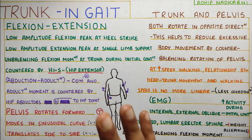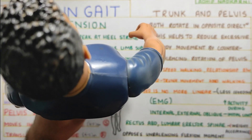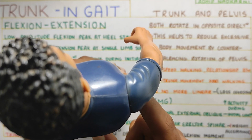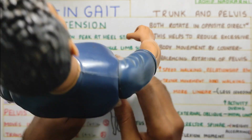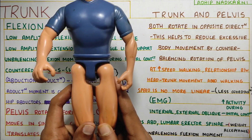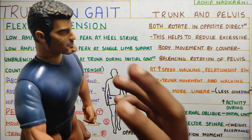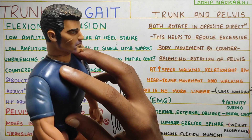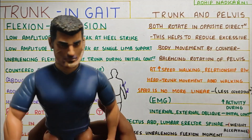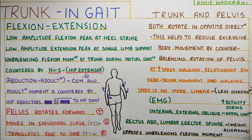To summarize what we covered: we looked at movements occurring at the trunk and pelvis. At the pelvis, there is movement in all three planes — first, rotation (forward rotation of the pelvis), which is exactly opposite to the rotation of the trunk; in the sagittal plane, a sinusoidal pattern; and in the frontal plane, transverse side-to-side movement. At the trunk, there is low-amplitude flexion and extension, counterbalanced by hip extensors, lumbar extensors, and trunk flexors. There is also rotation at the trunk, initiated and controlled by the internal and external obliques.